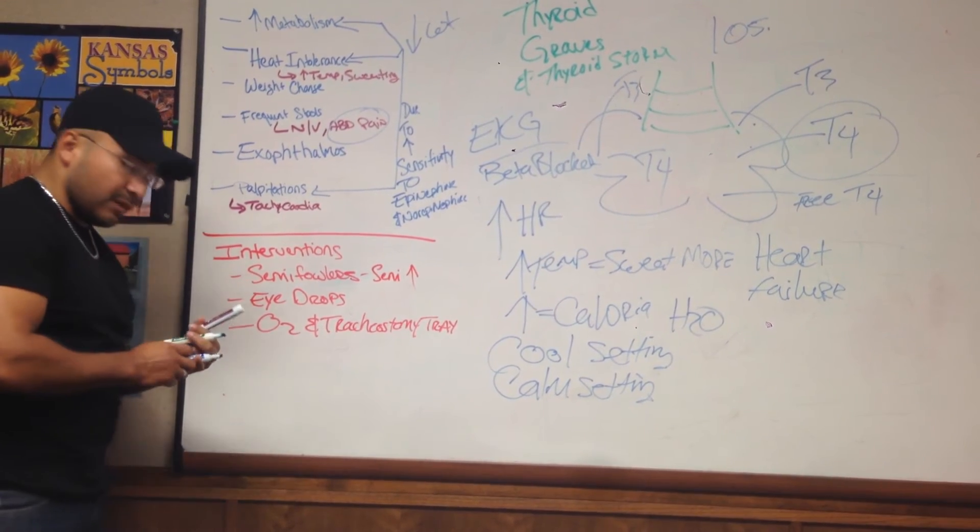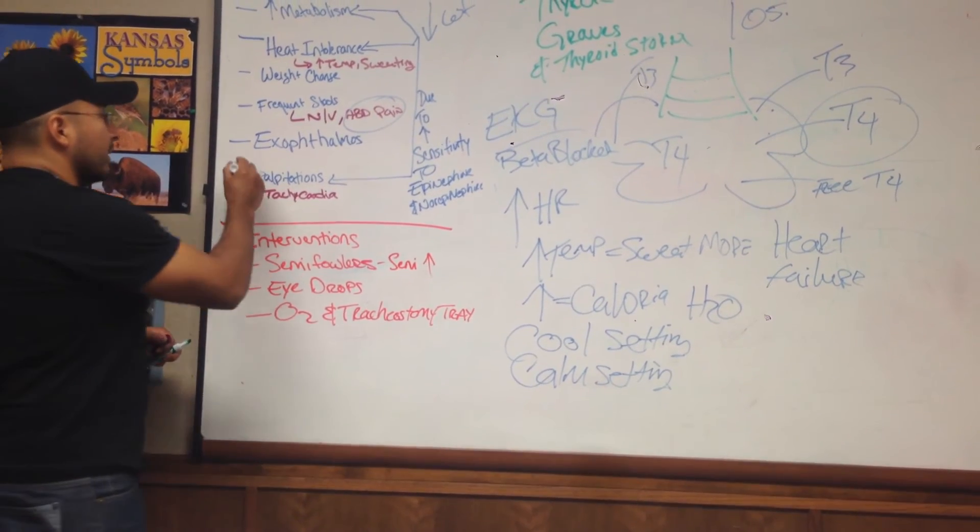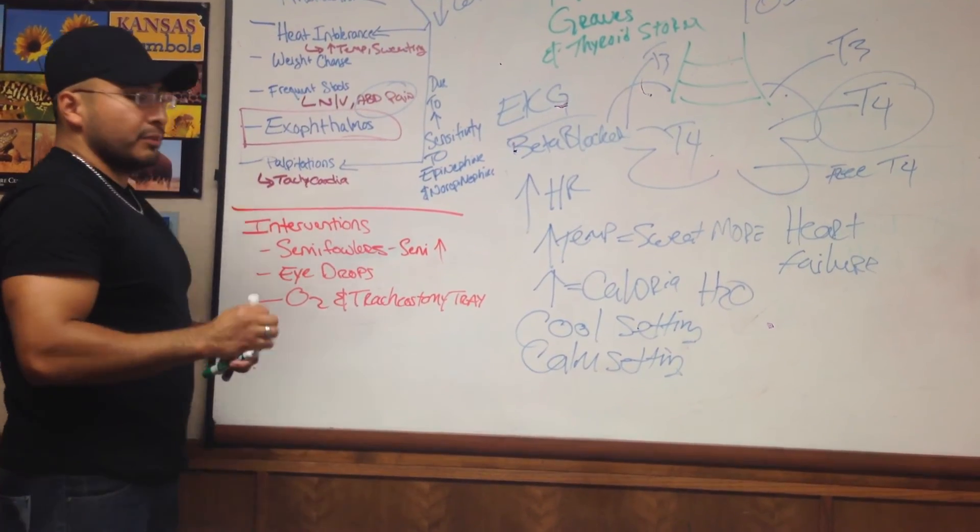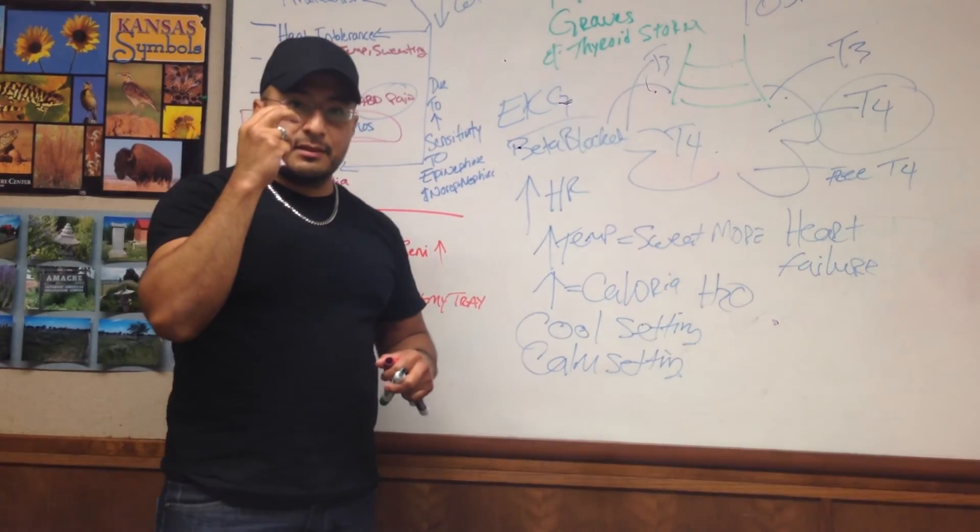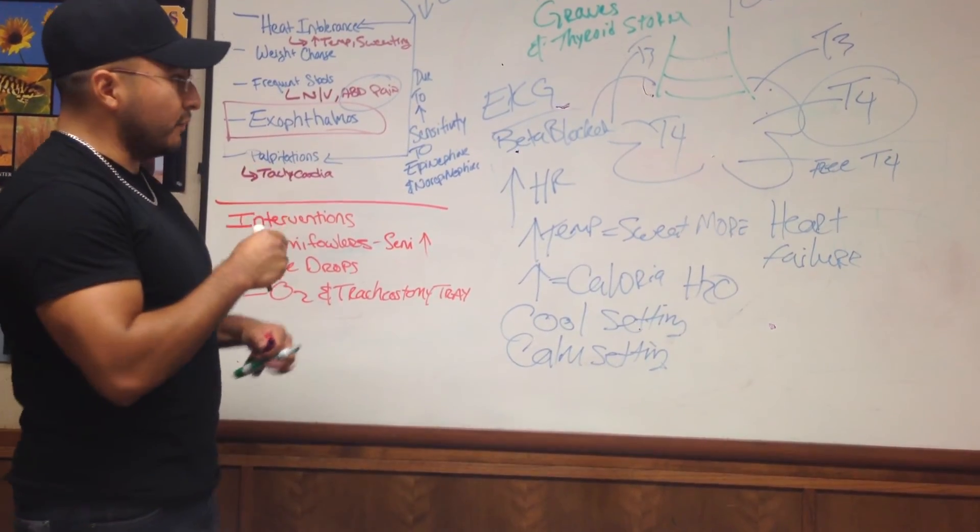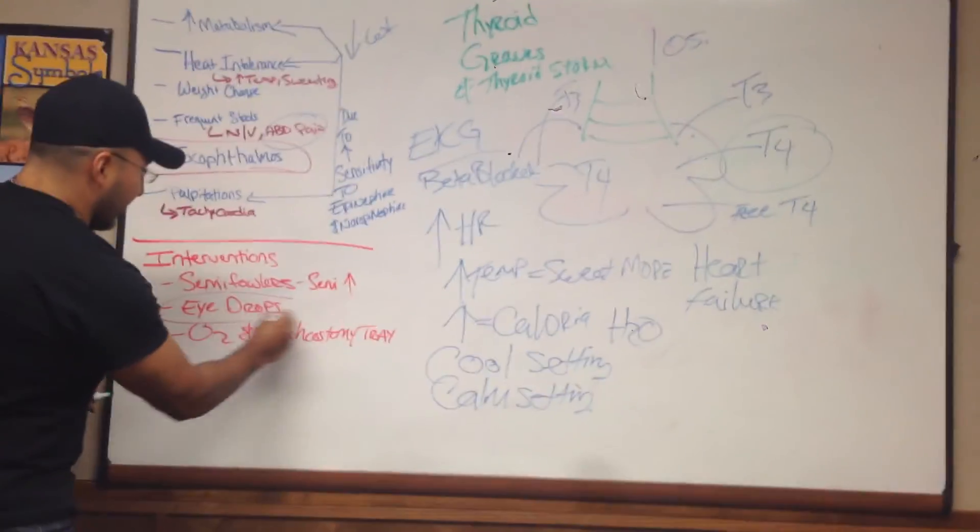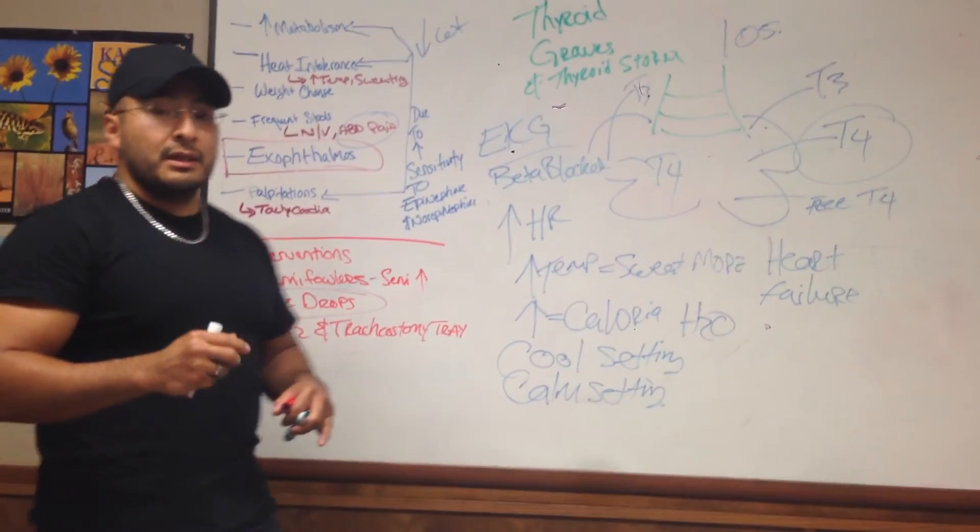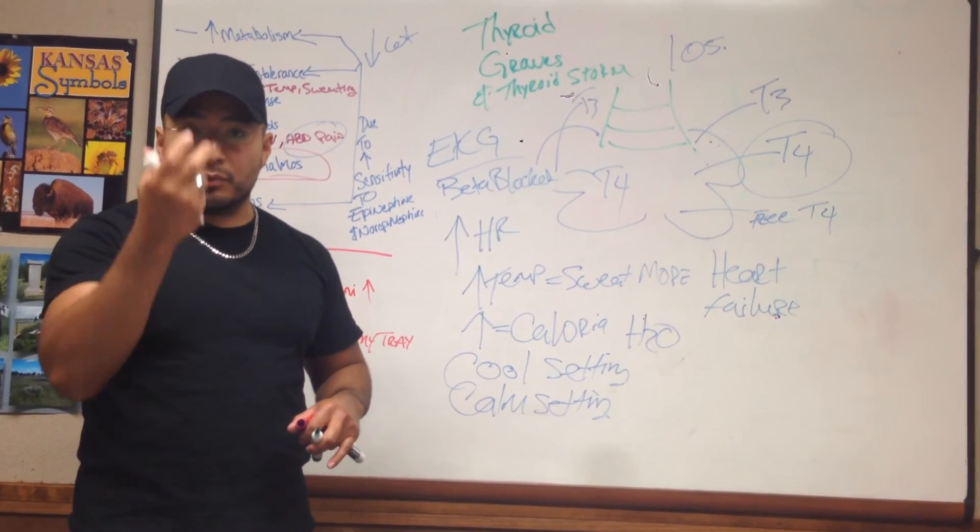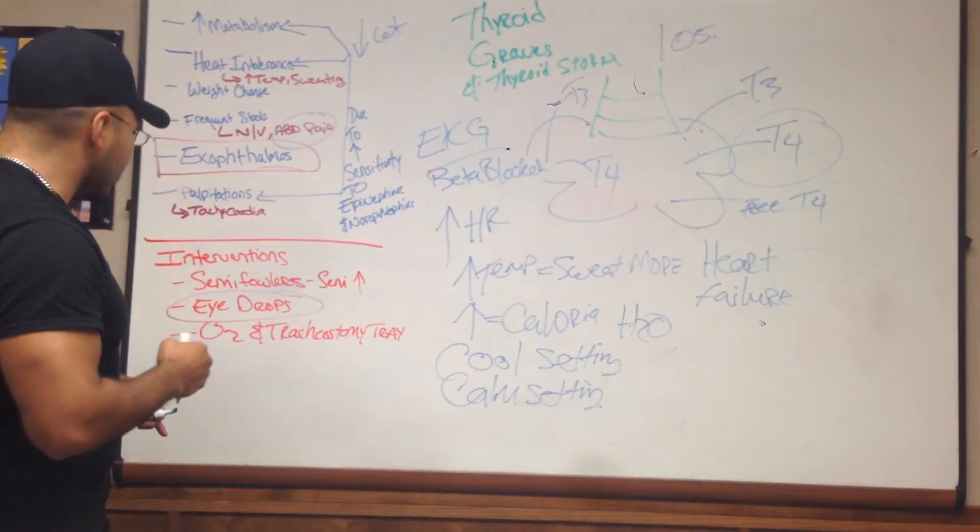And a biggie that the book will talk about, one that you might run into your exam, is something called exophthalmos. Now what that is is a protrusion of the eyes. Go ahead and Google that if you want. And so what you need to do for these patients is provide eye drops for eye care, frequent eye care. Make sure that, number one, they don't get dry. And two, since they are protruding, since they are bulging out, that the lenses do not get scratched. So there's another intervention for you.